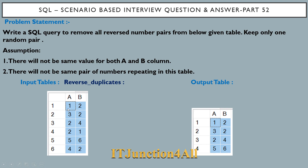What we have to do first is reverse the numbers. So 1,2 will become 2,1, and we have that pair present at row number 4, so we keep only one such pair. Similarly, if we see 3,2 and reverse it, it becomes 2,3 — we do not have that pair, so 3,2 will also be present in the output. For row number 3, we have 2,4; if we reverse it, it becomes 4,2, which is row number 6, so we keep only one pair — 2,4 — in the output.